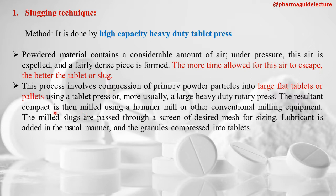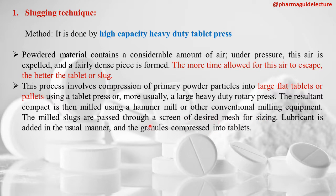This process involves compaction of primary powder particles into large flat tablets or pellets using a heavy duty rotary press. The resultant compacts, called slugs, are then milled using a hammer mill or conventional milling equipment. The milled slugs are passed through a screen of desired mesh for sizing to obtain granules within the desired particle size range.